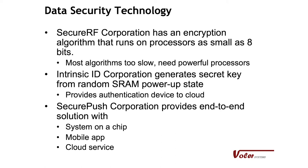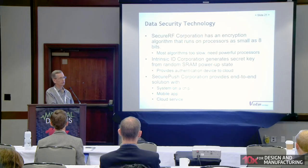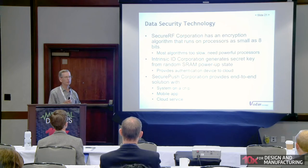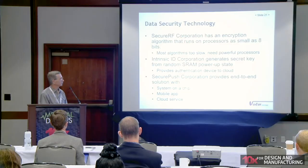There are companies offering software and hardware to help solve security problems so you don't have to do it all from scratch. SecureRF is an encryption that runs on a tiny processor. Intrinsic ID and other companies use a key generated from the random state of RAM when the device powers up — so you don't have to put a key in the device, it already has one, and every device has a different key. Companies like SecurePush provide hardware, software, and cloud integration, so it's not as daunting as it could be.